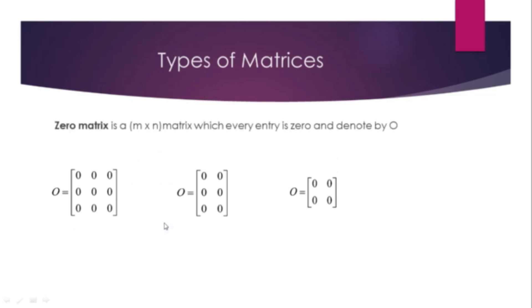Zero matrix — an m by n matrix in which every entry is 0, denoted by 0.